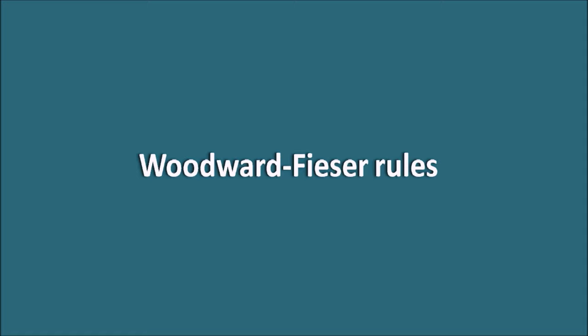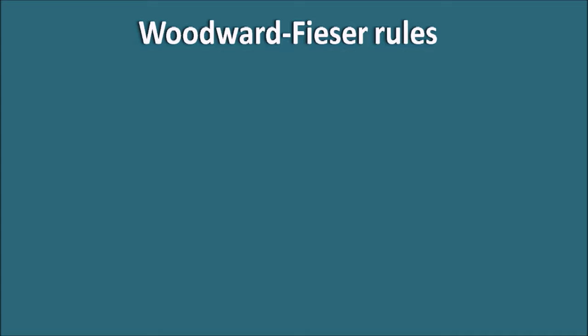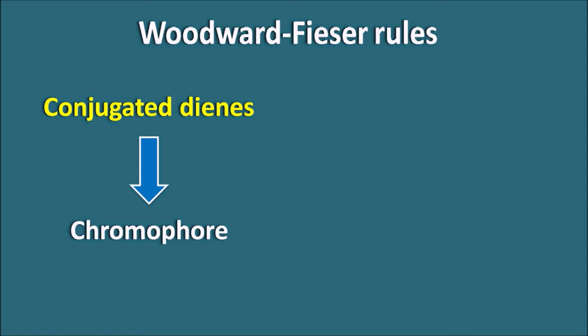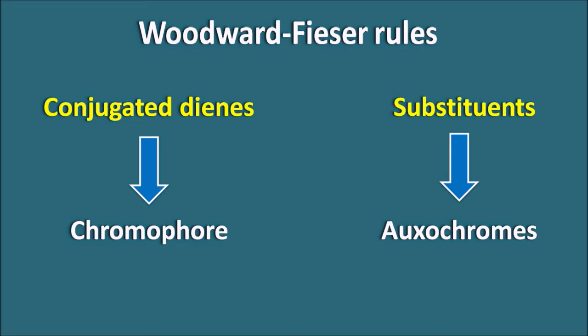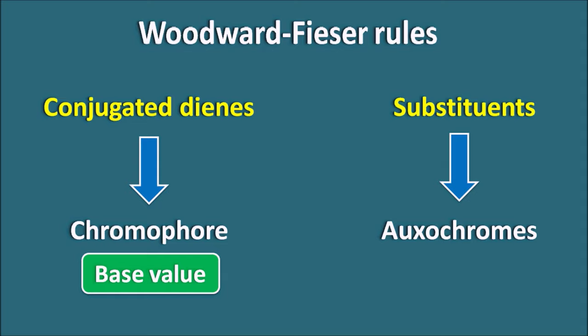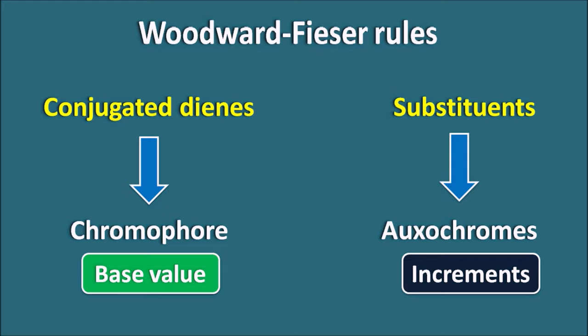For this we will use the Woodward-Fieser rules, which give base and increment values for various structures. Here we discuss conjugated dienes. Conjugated dienes act as chromophores — they are the groups responsible for the absorption of UV-visible radiation. The substituents on the conjugated diene system act as auxochromes, meaning these groups cannot absorb UV-visible radiation directly but they increase the absorption of the chromophore. In a structure, the chromophore is assigned a base value, and auxochromes are assigned smaller increment values.